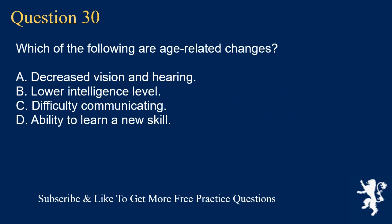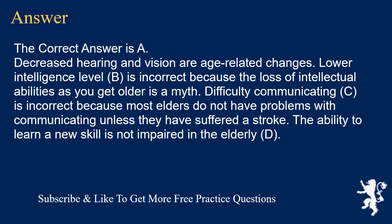Question 30. Which of the following are age-related changes? A. Decreased vision and hearing. B. Lower intelligence level. C. Difficulty communicating. D. Ability to learn a new skill. The correct answer is A. Decreased hearing and vision are age-related changes. Lower intelligence level is incorrect because the loss of intellectual abilities as you get older is a myth. Difficulty communicating is incorrect because most elders do not have problems communicating unless they have suffered a stroke. The ability to learn a new skill is not impaired in the elderly.